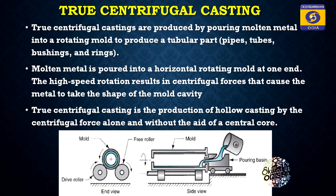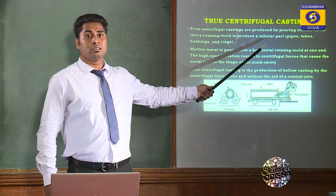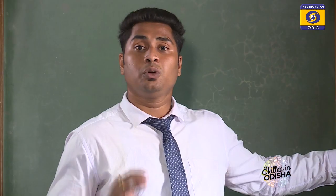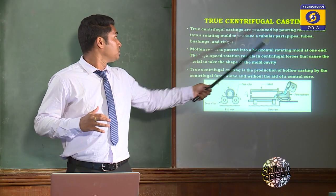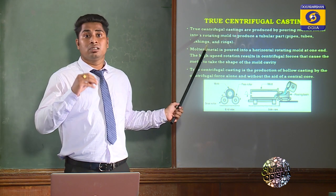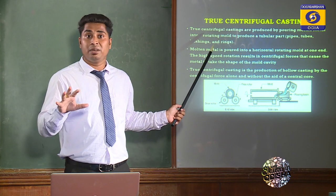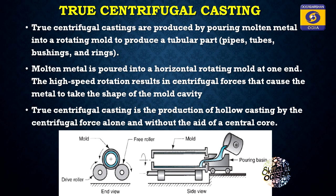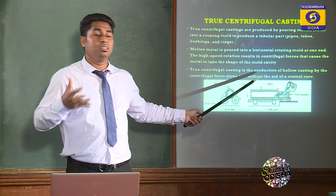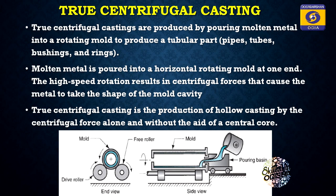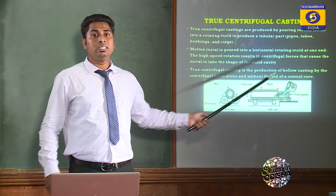True Centrifugal Casting Process is used to produce tubular parts such as pipes, tubes, bushings, and rings — all axisymmetric with a concentric hole. The molten metal is poured into a horizontally rotating mold. Due to high-speed rotation, centrifugal forces push the molten metal towards the outer mold wall, so there is no requirement of a core. True centrifugal casting produces hollow castings by centrifugal force alone, without any central core.